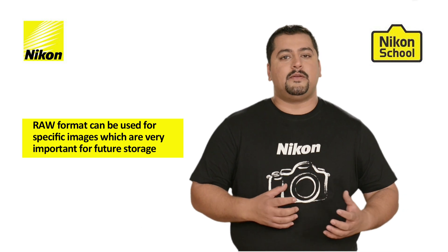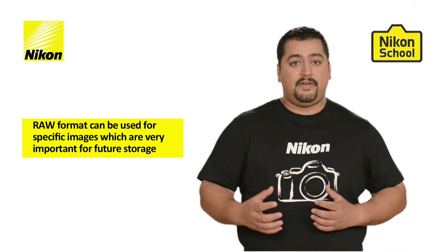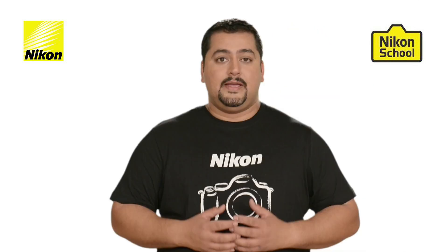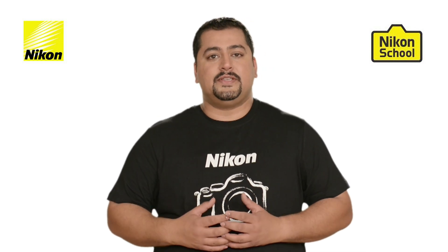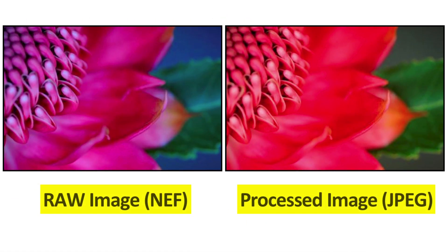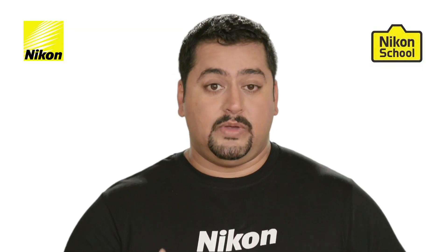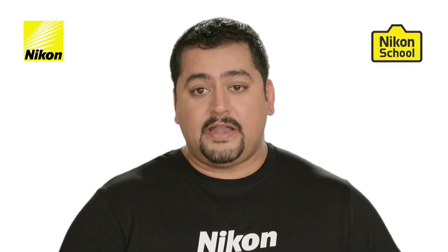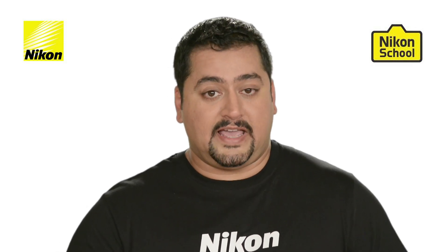Raw format can be used for specific images which have a great archival value or are needed for future storage. Now, let's have a look at these two images on the screen. The JPEG image, which is a processed image, has very little scope for post-processing. If we try and post-process a JPEG image, we might lose picture quality. Whereas in a raw image, we can manipulate the exposure up to two stops. We can change the white balance or post-process it how we like, as we desire.